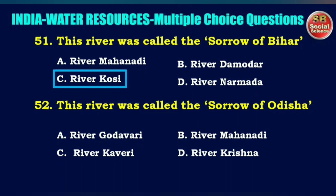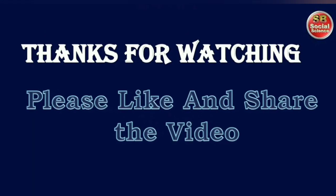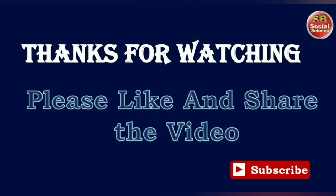This river was called the Sorrow of Odisha — options are River Godavari, River Mahanadi, River Kaveri, or River Krishna. The right answer is option B: River Mahanadi. Okay students, practice well. These are all the important multiple choice questions, and we will continue our class with the next lesson.